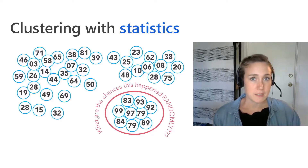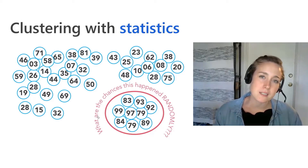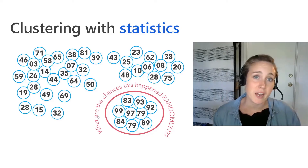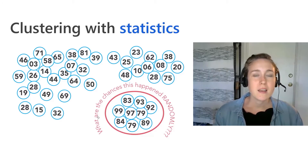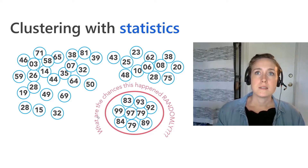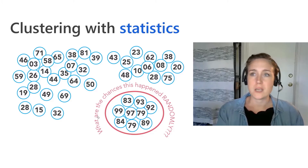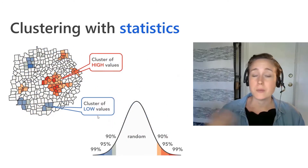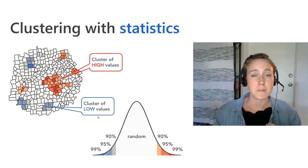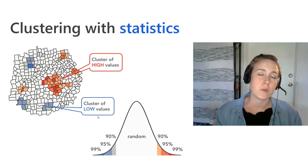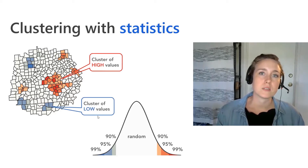We're asking how likely it is that a pattern we're seeing — where all high values fall together — happened randomly. Is it random luck, or is there some underlying spatial process that led to this clustering? When we're confident that clustering is not just random, it can help us decide to implement policies or allocate resources. We answer that question using statistics with p-values and z-scores, and the maps we create show where we have clustering of high and low values different from what we'd expect based on random chance.